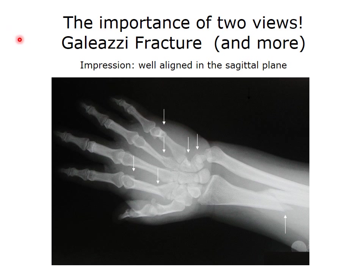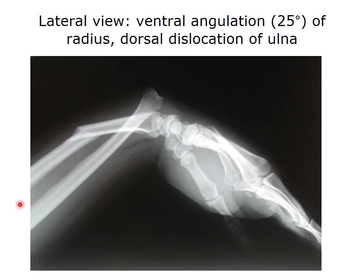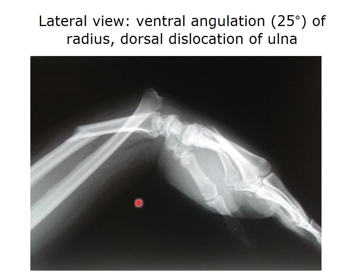Here's another example showing the importance of two views when considering alignment. Looking at this Galeazzi fracture — a fractured distal radius and dislocation of the distal radial ulnar joint — things look well aligned in the sagittal plane on one view. But on the lateral view, the same image looks radically different. We can see a dorsal dislocation of the ulna, and ventral or palmar angulation of approximately 25 degrees. There's the thumb indicating volar, and we have a ventral angulation of the radius.